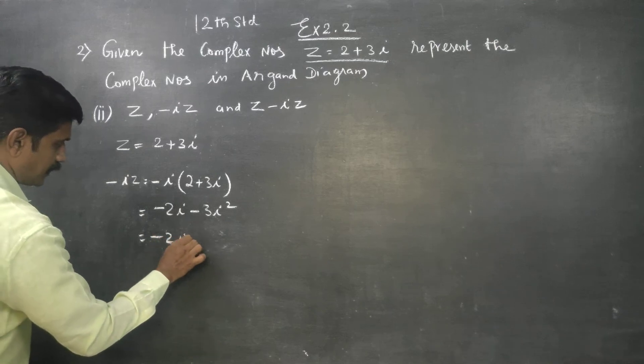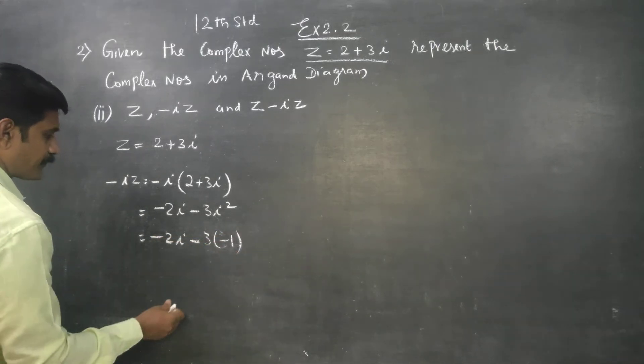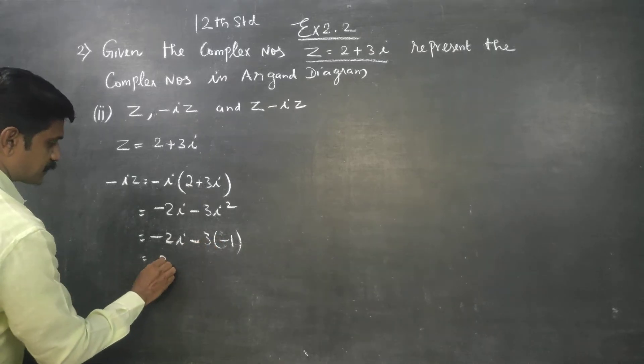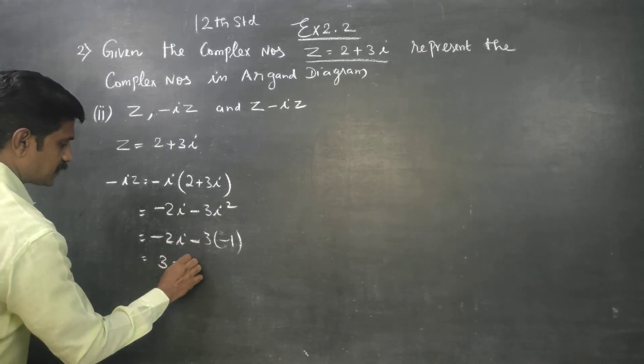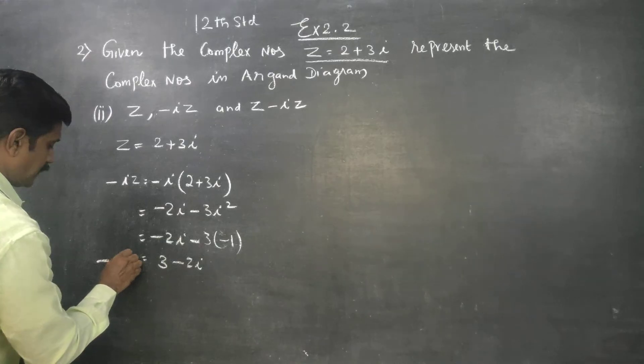Minus 2i minus 3i squared is minus 1. Therefore, minus into minus is plus 3, so minus iz equals 3 minus 2i.